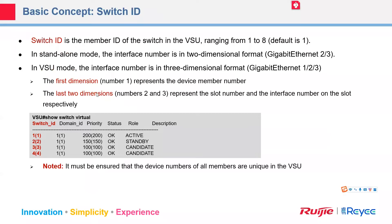The switch ID should be different in the same domain ID. Pay attention — normally an interface value might be two-slash-three, but if we use VSU we add one number in front, like one-two-three: the first number is the switch ID, the second is the slot ID, and the third is the interface ID. All switch IDs should be unique within the VSU.